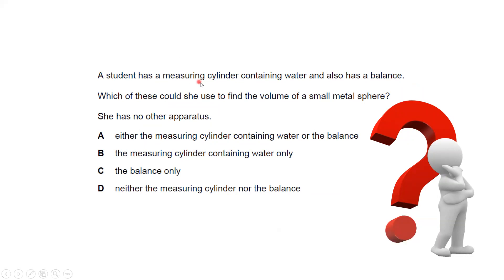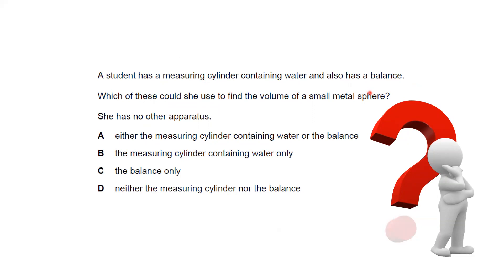Another question: a student has a measuring cylinder containing water and a balance. The balance is used to measure mass. Which of these could she use to find the volume of a small metal sphere? She has no other apparatus.